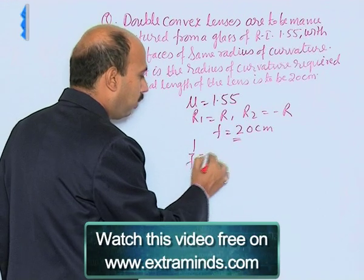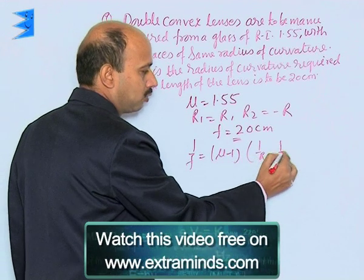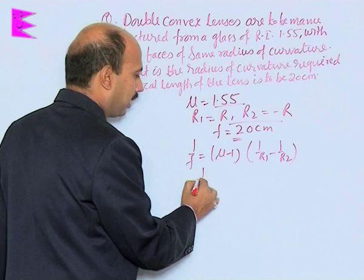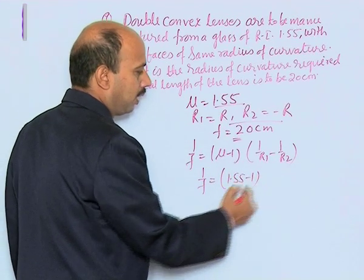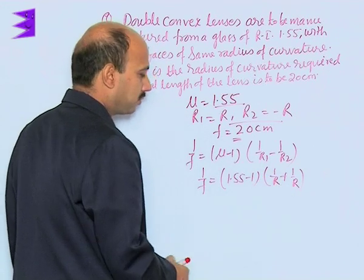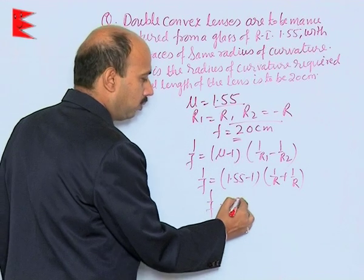We know that 1/f equals (mu minus 1) times (1/R1 minus 1/R2). By putting all these values we can get 1/f equals (1.55 minus 1) times (1/R plus 1/R). That is 1/f equals 0.55 times 2/R.